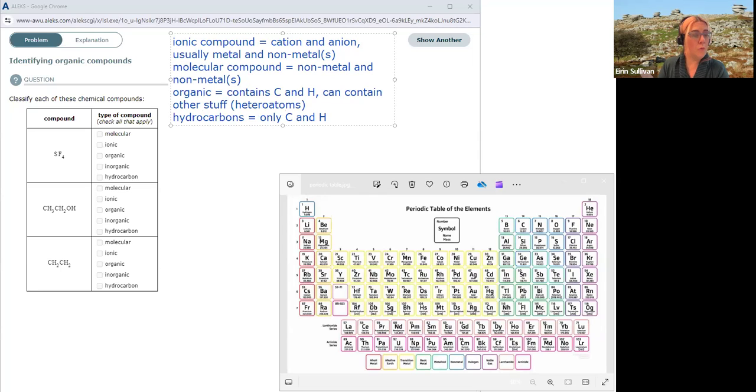When we are going to call something inorganic, it means it doesn't fit the definition of being organic. So if it doesn't contain carbon and hydrogen, it has to be inorganic. Inorganic doesn't contain both carbon and hydrogen. So that means you can have an inorganic compound that contains just carbon or just hydrogen, but doesn't have both of them. Inorganic compounds are going to tend to be ionic.